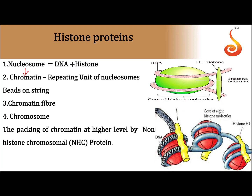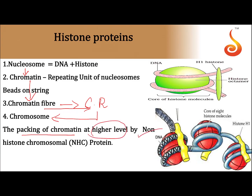A group of nucleosomes together is called chromatin. A group of chromatin together forms chromatin fiber. Chromatin fiber becomes chromatin reticulum during cell division, and chromatin reticulum becomes chromosome. After cell division, the chromosome becomes chromatin reticulum again. Chromosomes are made up of nucleic acid and two types of proteins: histone and non-histone proteins.